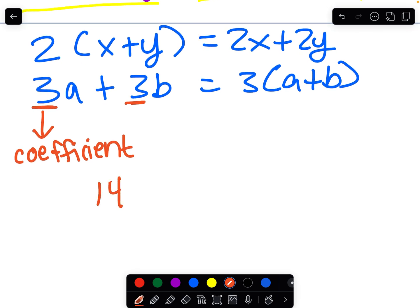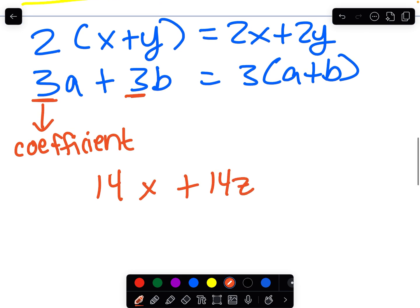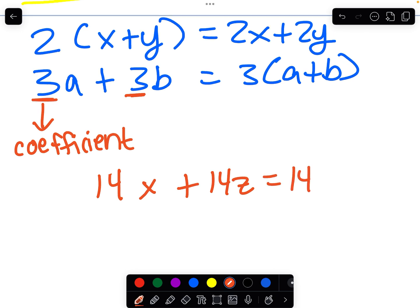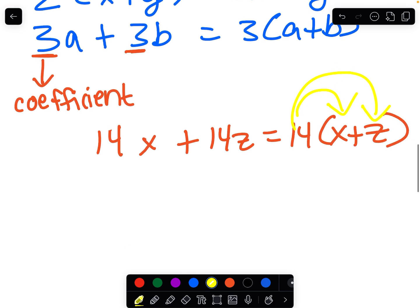So if I have 14x plus 14z, it's the same as, an equivalent expression would be 14 times x plus z. And if you're not sure, apply the distributive property: 14x plus 14z. I always draw those rainbow lines to help me.